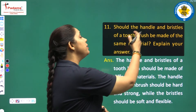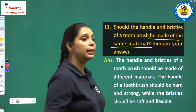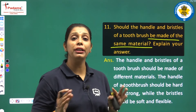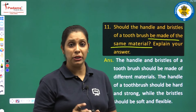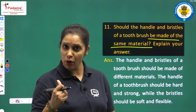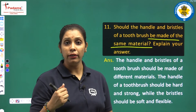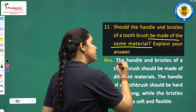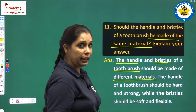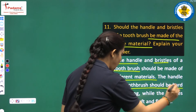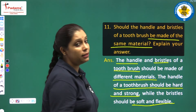Should the handle and bristles of a toothbrush be made of the same material? The handle and bristles of a brush are not made of the same material because the bristles are very soft, while the handle must provide a firm grip to brush our teeth. The handle and bristles of a toothbrush should be made of different materials. The handle should be hard and strong, while the bristles should be soft and flexible.